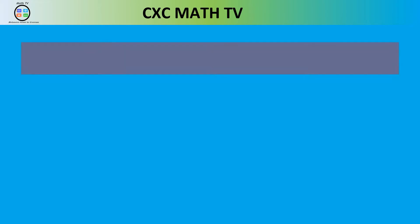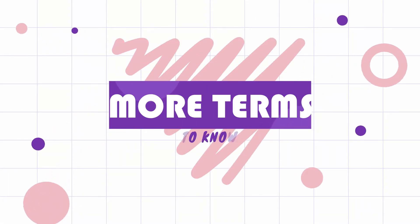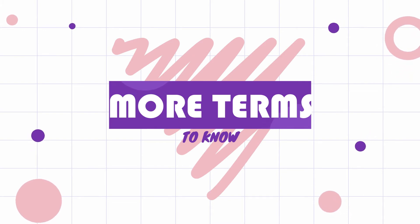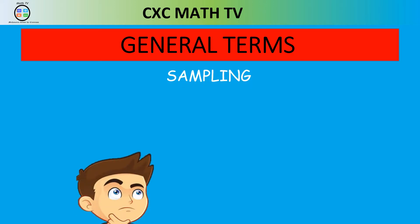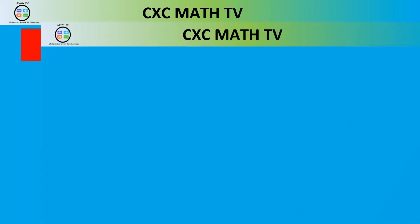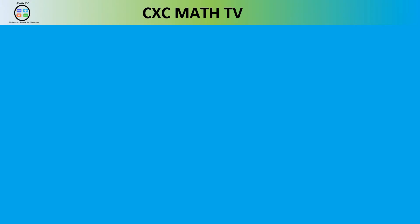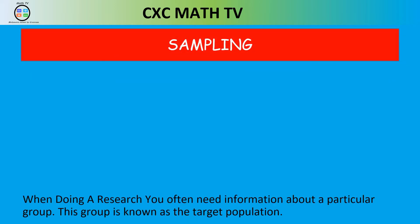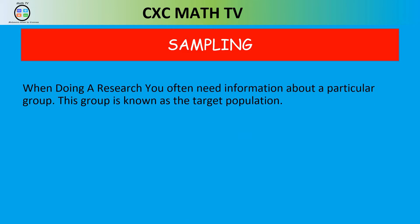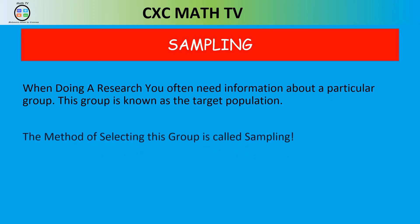Now before we really kickstart into what we want to learn, let's think about some more general terms. Number one is sampling. When you're doing research, you need information about a particular group. This group is known as the target population, and the method in which you obtain this information from this group is known as sampling.